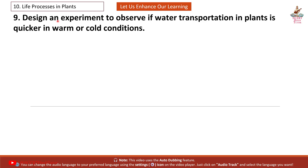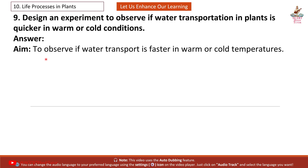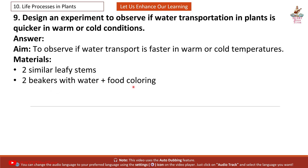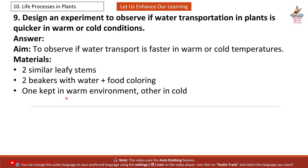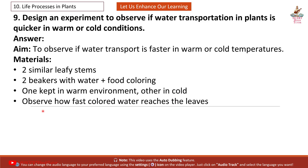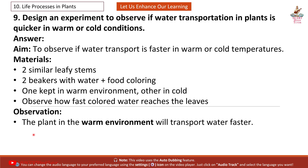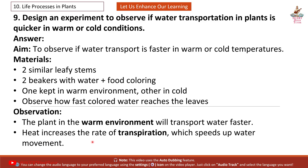Question 9: Design an experiment to observe if water transportation in plants is quicker in warm or cold conditions. Answer: To observe if water transport is faster in warm or cold temperatures, take 2 similar leafy stems and 2 beakers with water plus food coloring — one kept in a warm environment and the other in cold. Observe how fast the colored water reaches the leaves. The plant in the warm environment will transport water faster, as heat increases the rate of transpiration, which speeds up water movement.